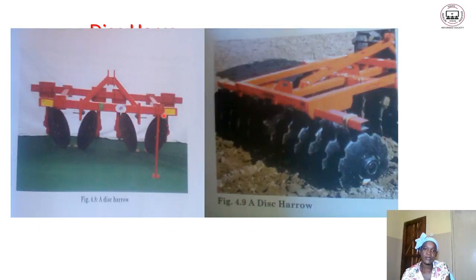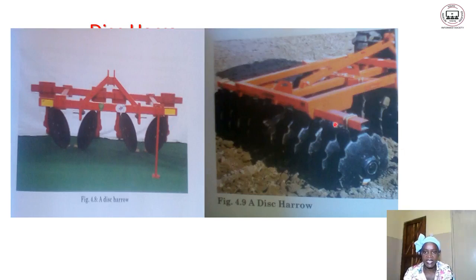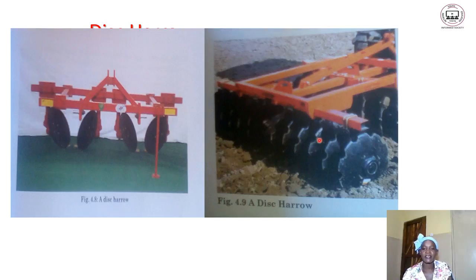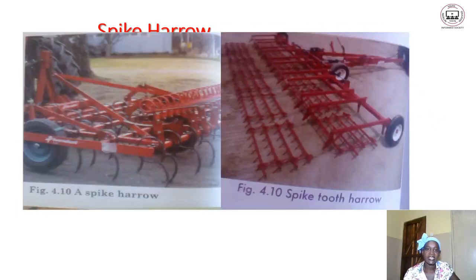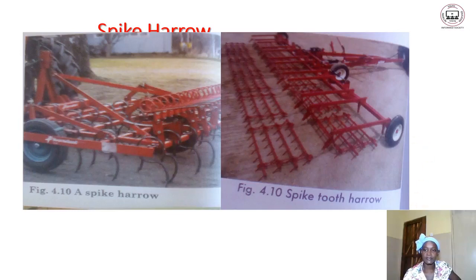Here we have pictures showing some of the harrows. This picture is showing a disc harrow — these discs are the ones which crush the soil clods. If there are large lumps of soil, these harrows are there to break the soil so that it should be smooth. Here we have a spring-tooth harrow, and this one shows a zigzag harrow and a spike harrow. These are the pictures showing some examples of tractor-drawn harrows.